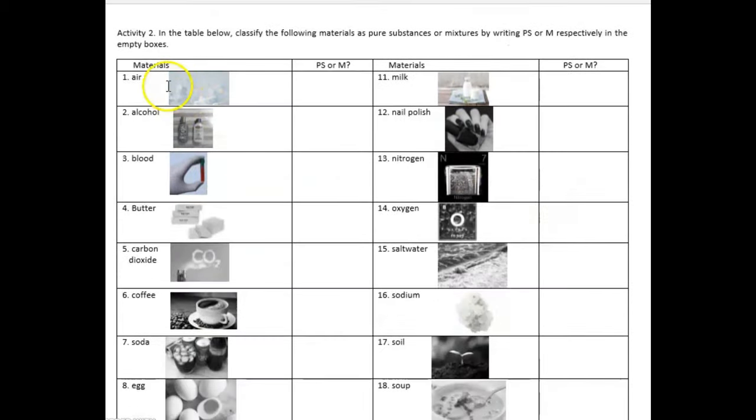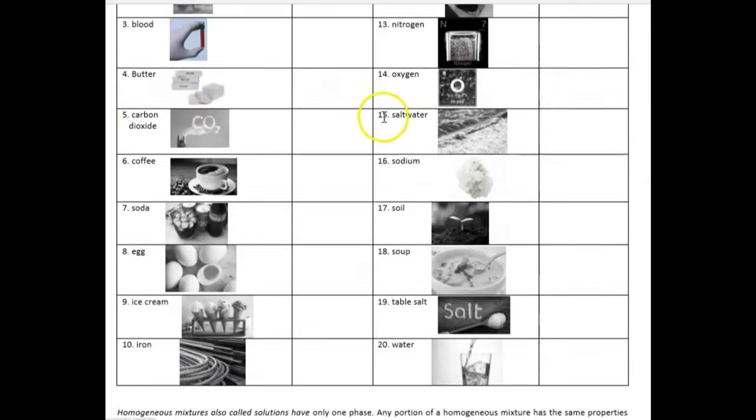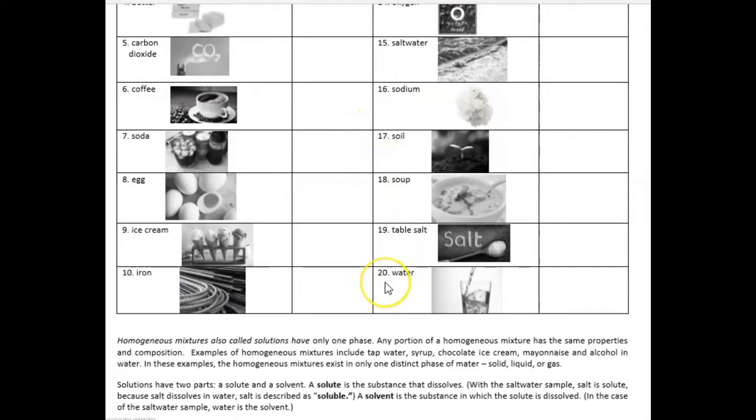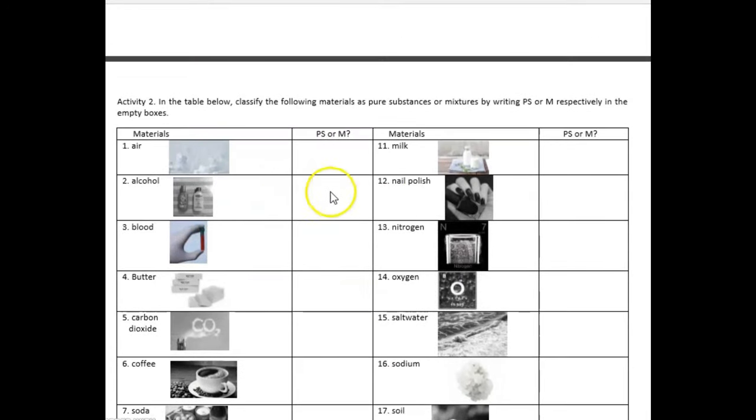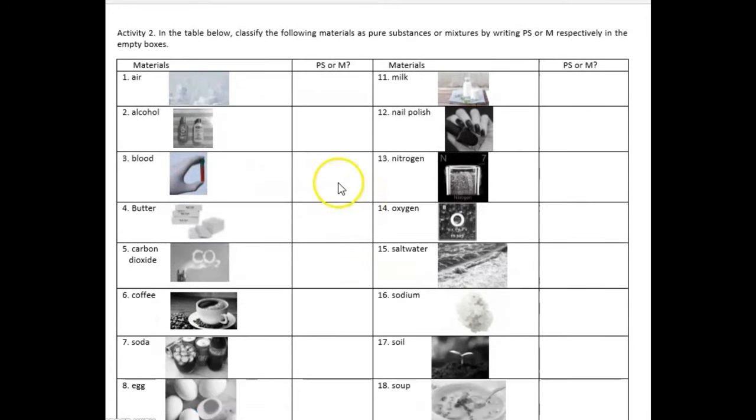Let's move on to activity number 2. In the table below, classify the following materials as pure substances or mixtures by writing P, S, or M respectively in the empty boxes. You don't need to draw the pictures. All you have to do is write the correct answer: P, S, or M. Example, air. So, how many do we have here? We have 20 items.